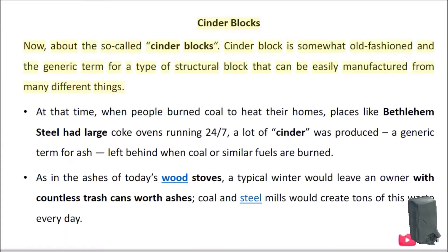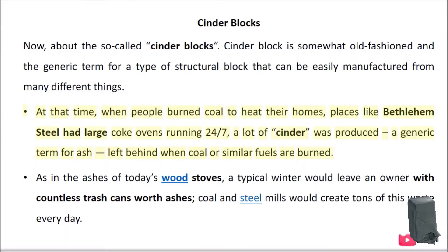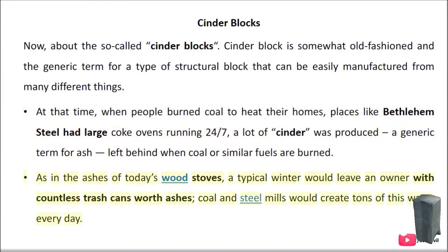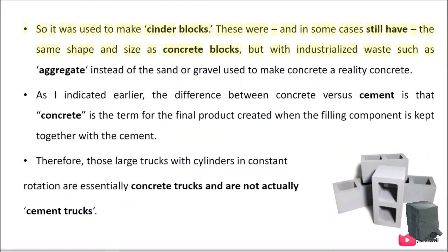Cinder block is somewhat old-fashioned — a generic term for a type of structural block that can be easily manufactured from many different things. At that time, when people burned coal to heat their homes, places like Bethlehem Steel had large coke ovens running 24/7, and a lot of cinder was produced — a generic term for ash left behind when coal or similar fuels are burned. Coal and steel mills would create tons of this waste every day, so it was used to make cinder blocks.